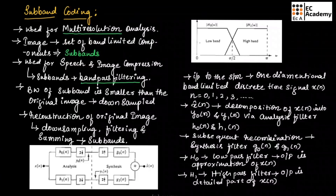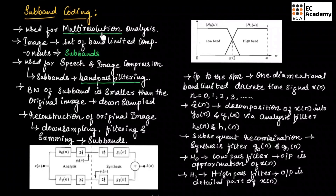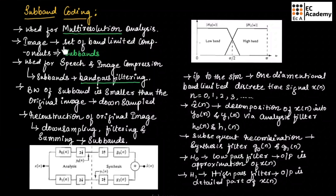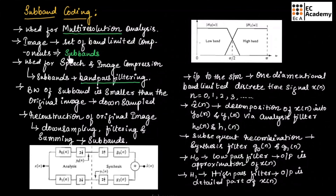Subband coding is another important imaging technique which is used for multi-resolution analysis. The image is decomposed into a set of band-limited components which are known as subbands, and these subbands can be reassembled to reconstruct the original image without any error.